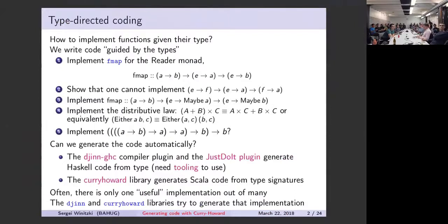As I said, there are often more than one implementation of a type, so you need to choose in some way. Both of these libraries — GIN and Curry-Howard — attempt to make a good implementation, to choose a good one. For example, they would reject the implementation that always returns Nothing. This is a heuristic, of course, but nevertheless a very useful one.